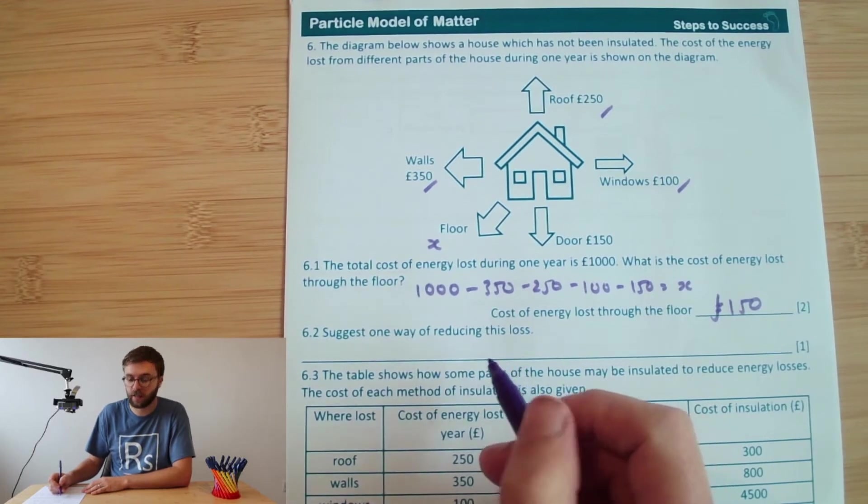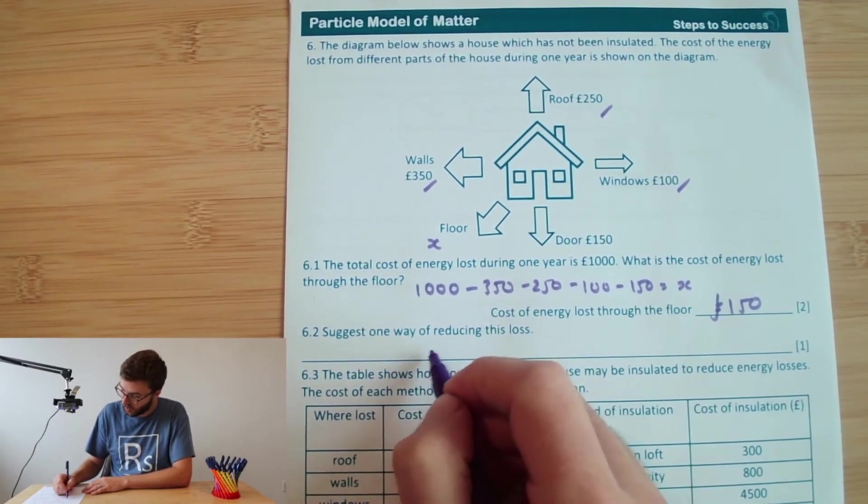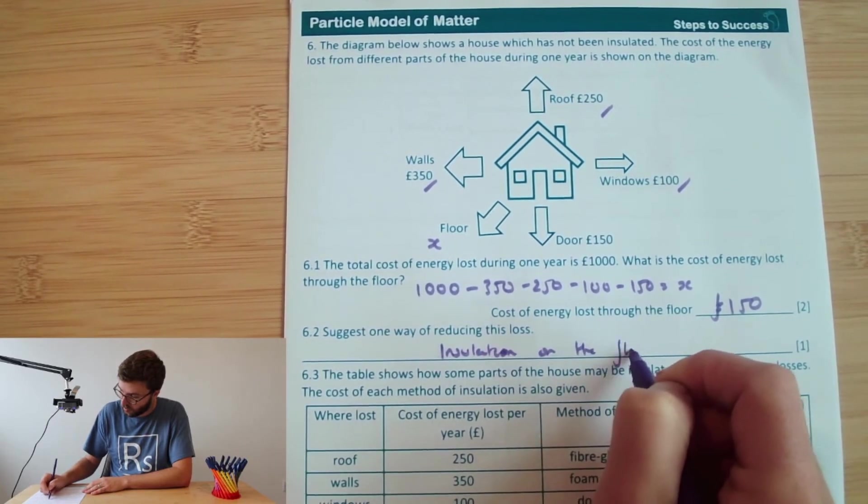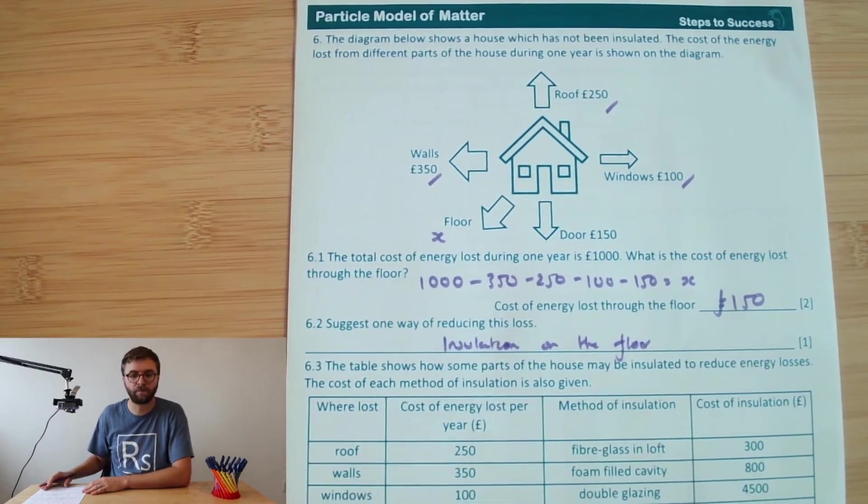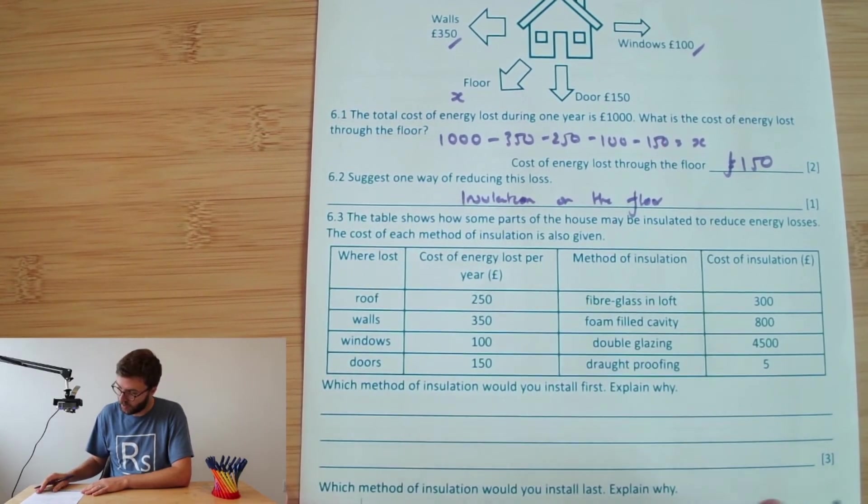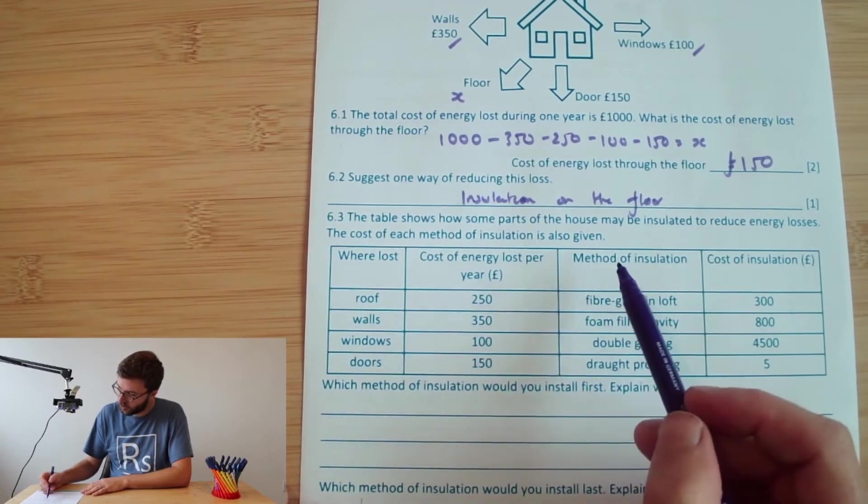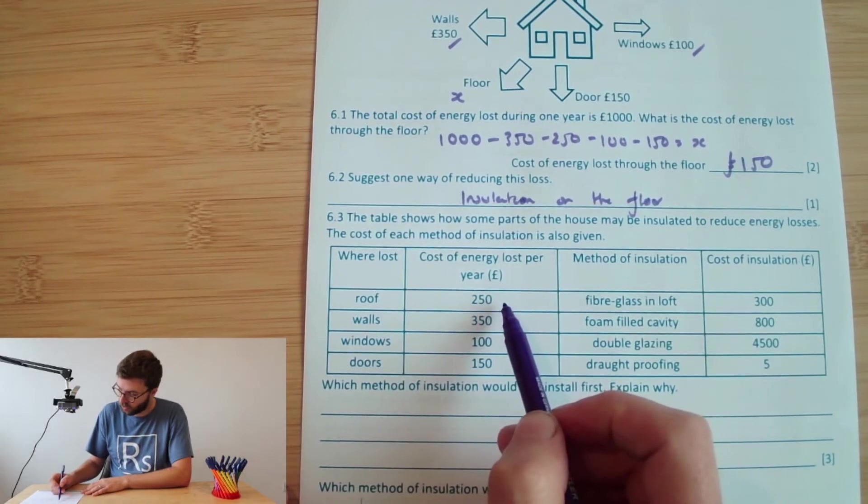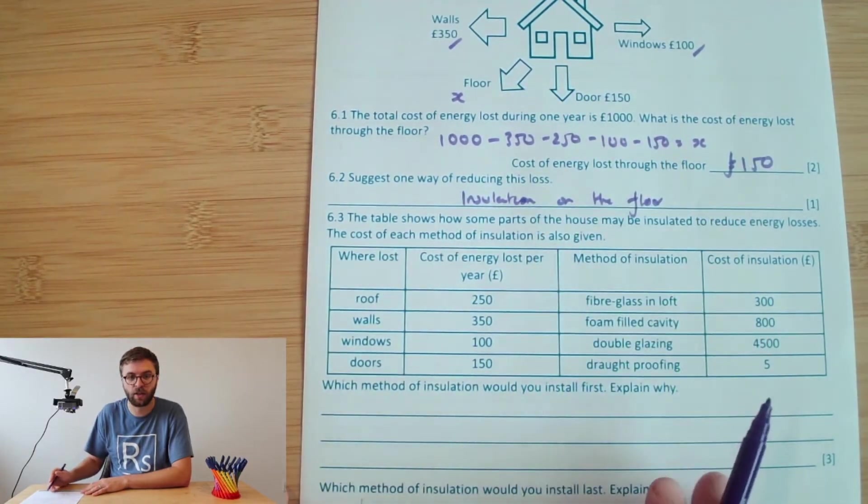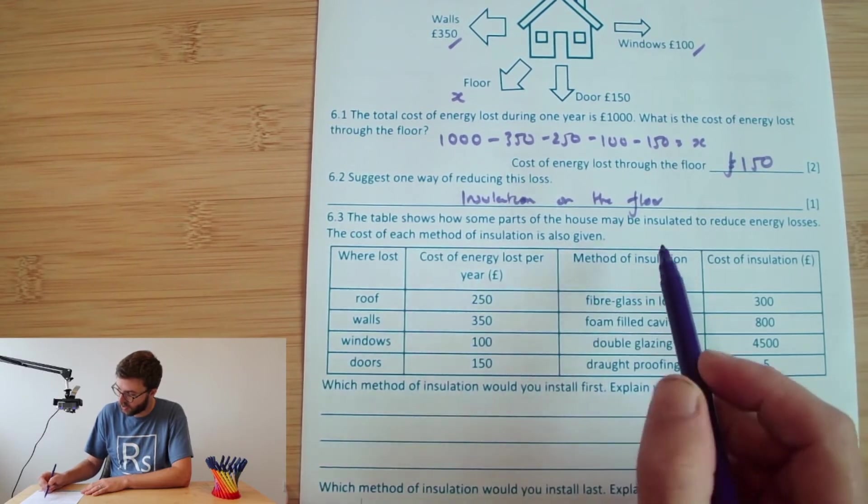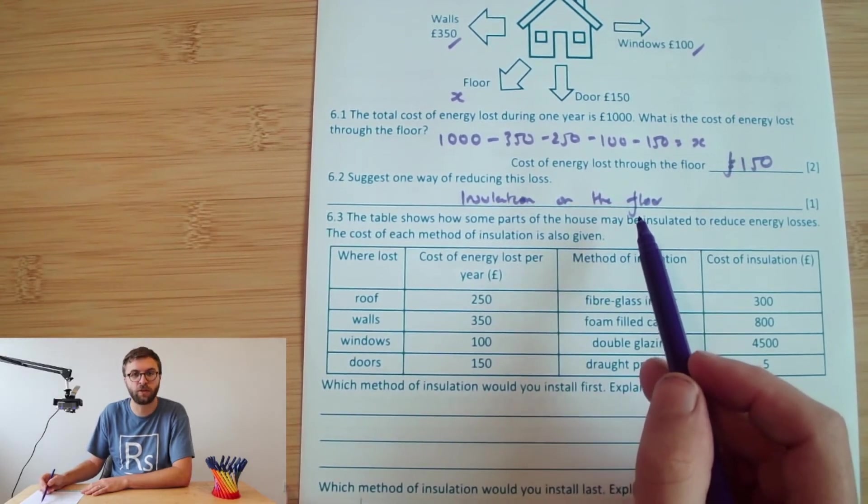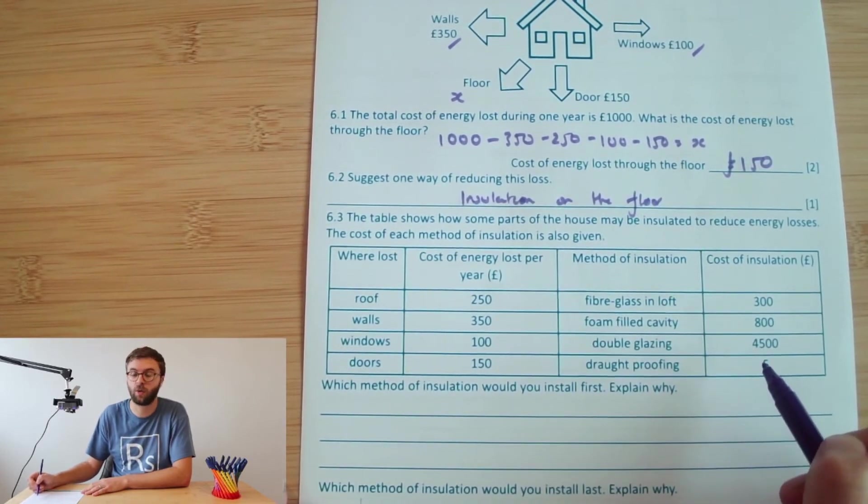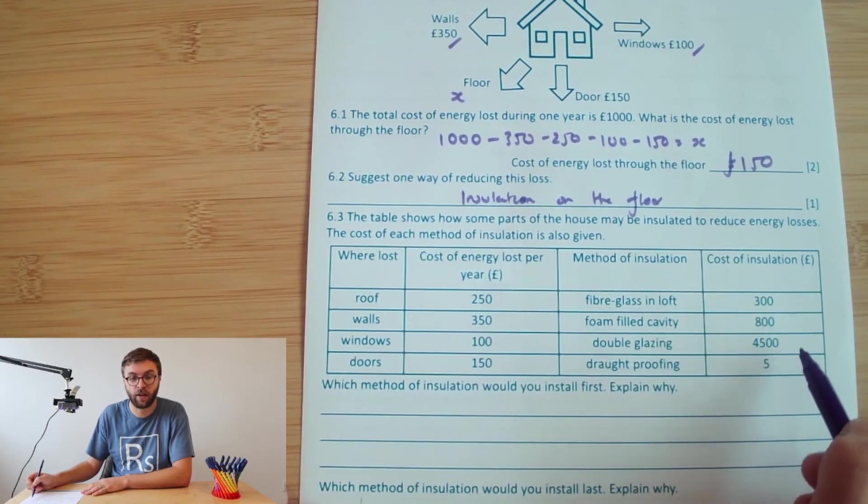So how could we reduce this loss? Well, it's a simple one mark question. So the best way to put it would be to put insulation on the floor. Okay, moving on to 6.3. It gives us a table and it shows us how some parts of the house may be insulated. So here's the different parts. It shows us the cost of energy loss per year, which is the same information that's in the diagram above. It tells you what we could do for insulation, which kind of gives us a clue for the answer before, which is a useful tip that you can sometimes pick up on exam questions. And it tells us how much that insulation will cost. And you can see there's quite a variation in different costs.